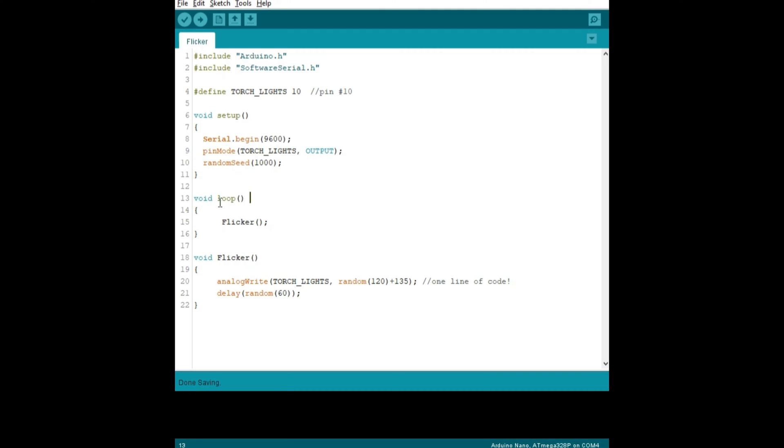Now in the loop, the main loop, all we have is one function called flicker, and here's the function defined right here. All we're going to do is take this analog write function and pass it the pin number, which is torch lights, and give it a random number. That's it. And we're going to delay it right after that approximately 60 milliseconds. Then it'll run in the loop all this time, flicker flicker flicker, until we stop it.